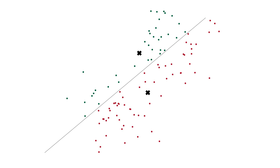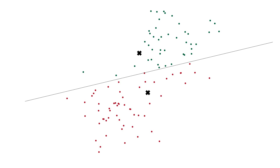Now we basically know all the steps we need to find the right decision boundary for the two classes — we just need to repeat everything. Remember what we did with our initial means: we calculated the distances of every data point to every mean and assigned each data point to the nearest one. If we do that from this point, our line changes. That means now the data is separated differently. That again gives us the possibility to calculate the means again, and this is what we end up with.